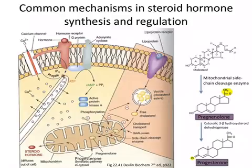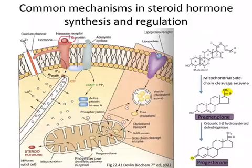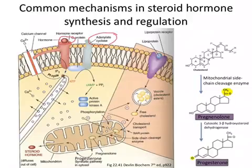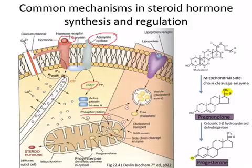The pathway typically begins with the binding of a trophic hormone to its G-protein-coupled receptor. ACTH, for example, is such a trophic hormone. LH and FSH are also trophic hormones — these come from the pituitary gland. These hormones stimulate their specific G-protein-coupled receptors, which activate adenylate cyclase, producing cyclic AMP, which activates protein kinase A, causing phosphorylation of many different proteins, one of which involves increased uptake of cholesterol from LDL cholesterol, bringing more cholesterol into the cell from the blood.